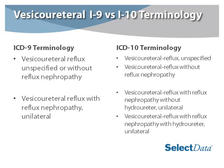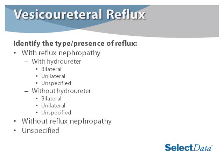When we compare terminology in ICD-9 and ICD-10, we had two codes in ICD-9: vesicoureteral reflux unspecified or without reflux nephropathy, or vesicoureteral reflux with reflux nephropathy unilateral. We now have codes available whether it's unspecified, without reflux nephropathy, without hydroureter with reflux nephropathy, or with reflux nephropathy with hydroureter and unilateral. We must identify the type and presence of reflux: If it's with reflux nephropathy, is it with hydroureter — bilateral, unilateral, or unspecified? Is it without hydroureter — bilateral, unilateral, or unspecified? Is it without reflux nephropathy, or is it unspecified?